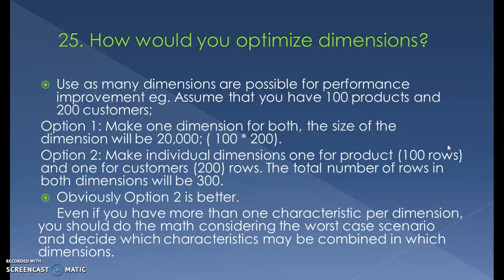At the dimension level, segregate characteristics based on familiarity. For example, if employee details span two dimensions, load employee number, employee name, and department in one dimension, and in another dimension store address, phone number, and contact details. The more you segregate dimensions, the better it will be for processing. The more dimensions you create, the better the performance.